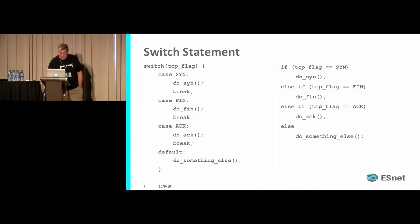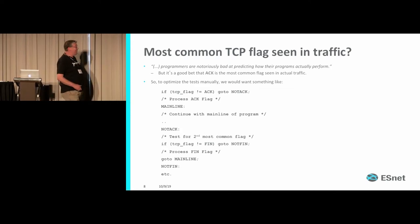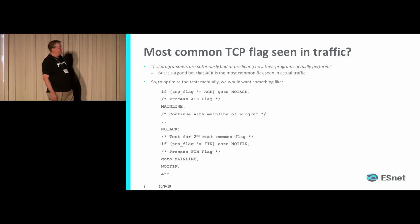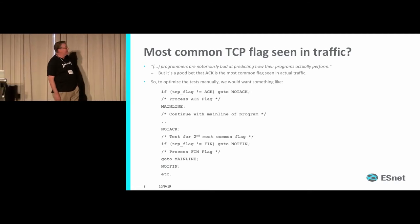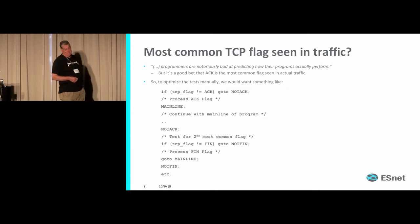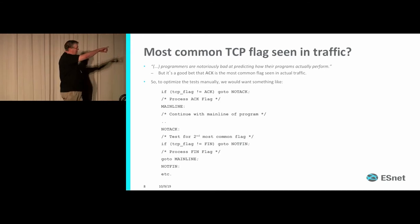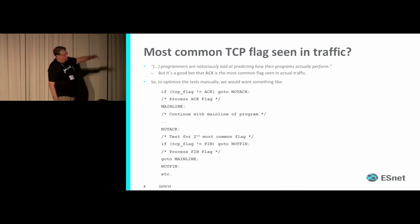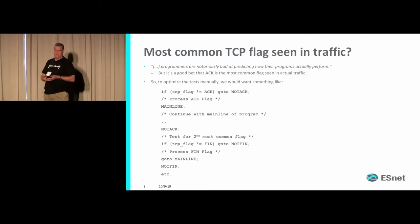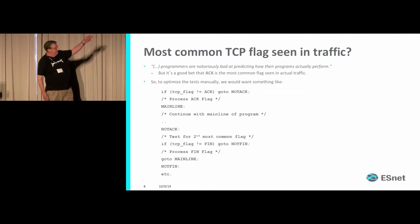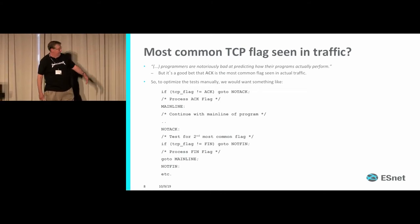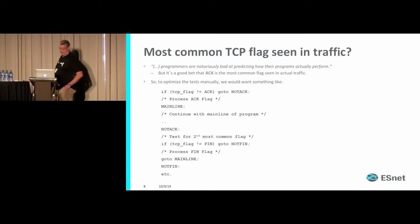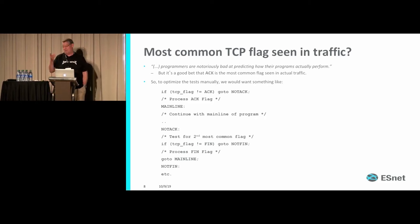Programmers are notoriously bad at predicting how their programs will perform. But if you've looked at network traffic, everyone's going to say ACK is probably the most common flag. So if you wanted to manually optimize this, you would say 'is it not equal to ACK?' and branch around, with the straight-line code processing that flag. This is to avoid cache misses and unnecessary branching — you want the uncommon case out of the main line. This is how you would do it manually, which is crazy — it would drive you crazy trying to accomplish this.